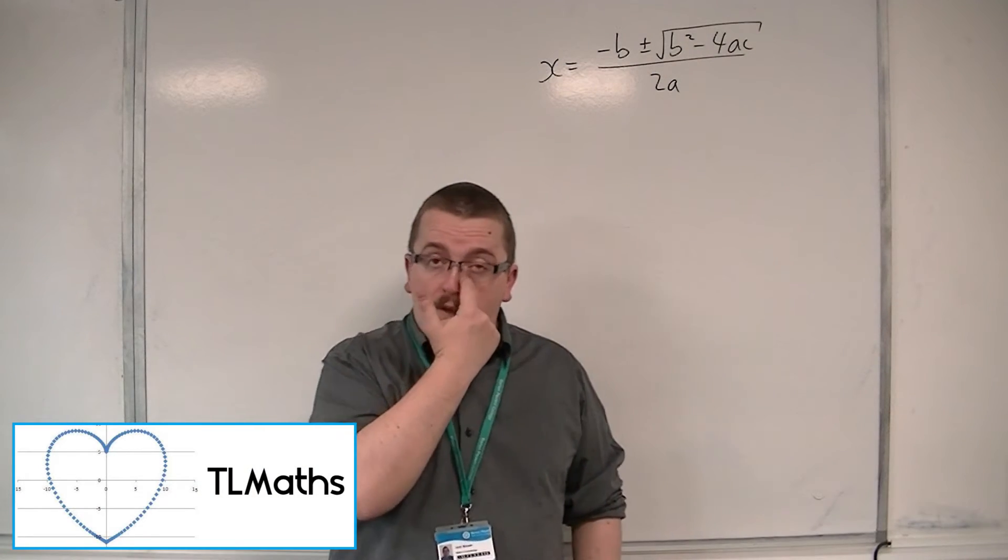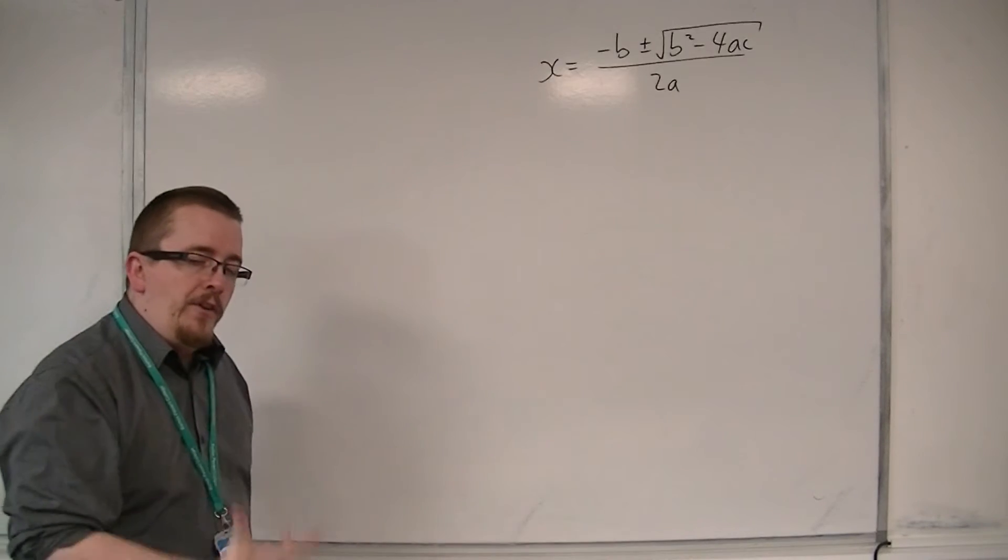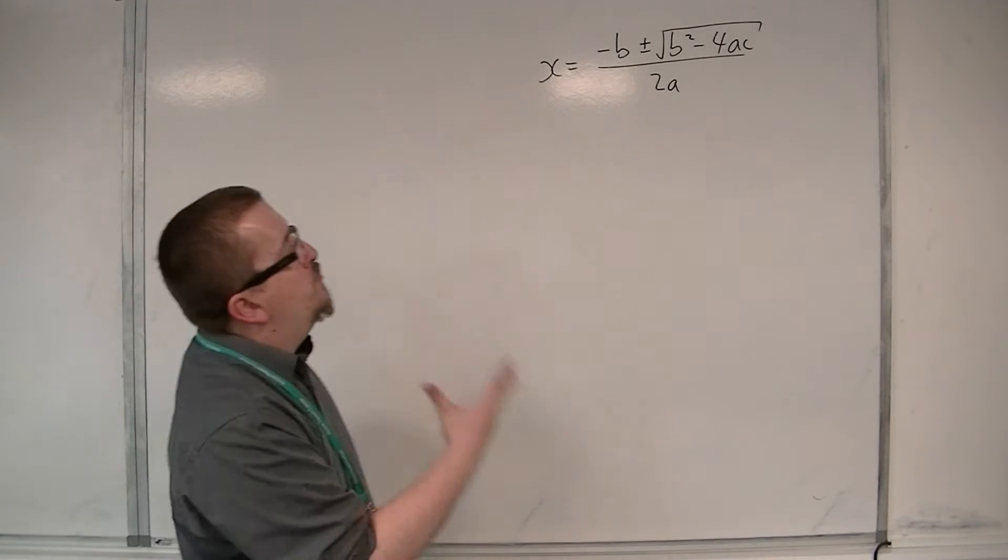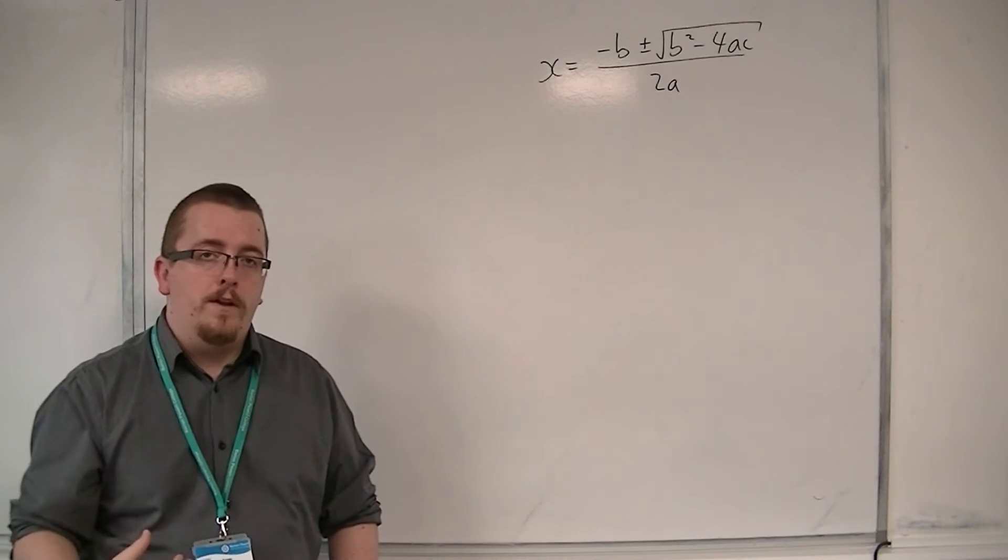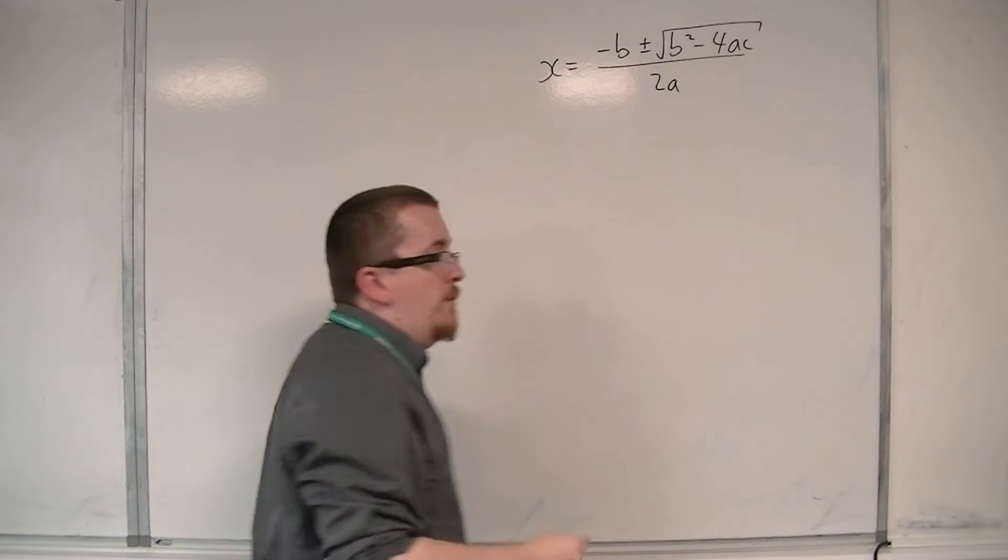So in the previous video, what we found was that for certain quadratics, the quadratic formula won't work. And it's because of the number that you get underneath the square root sign.